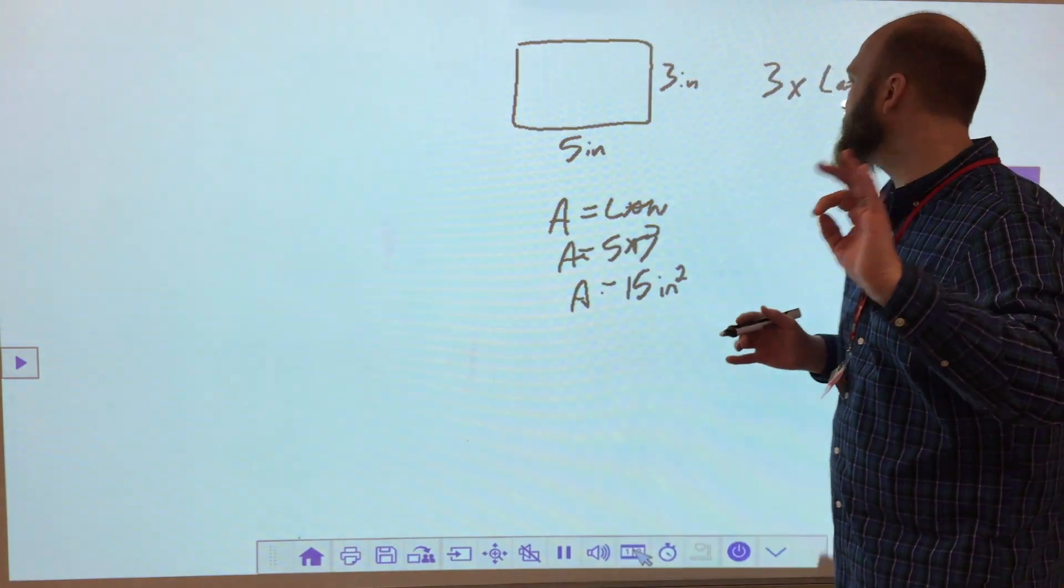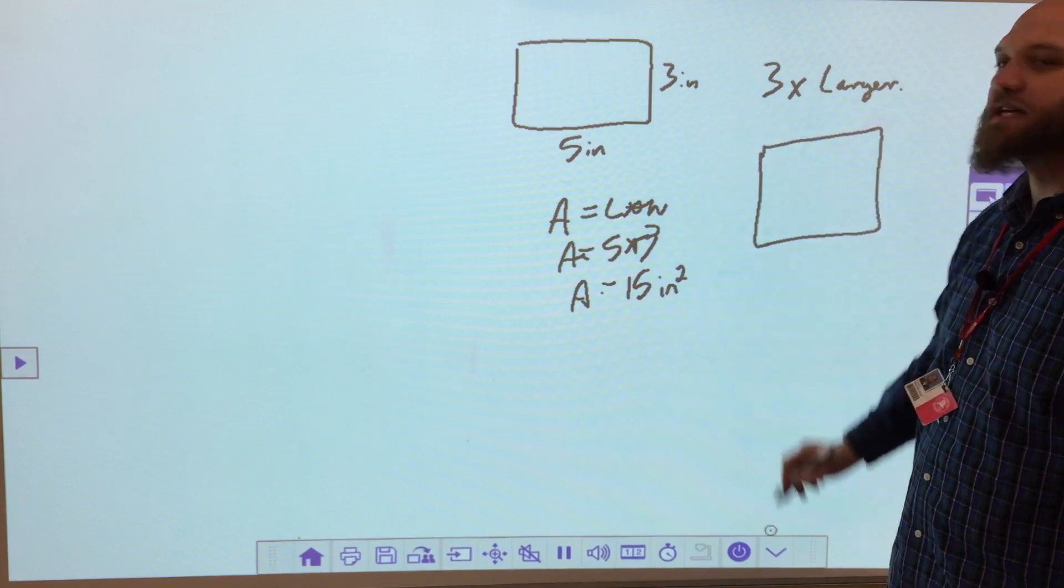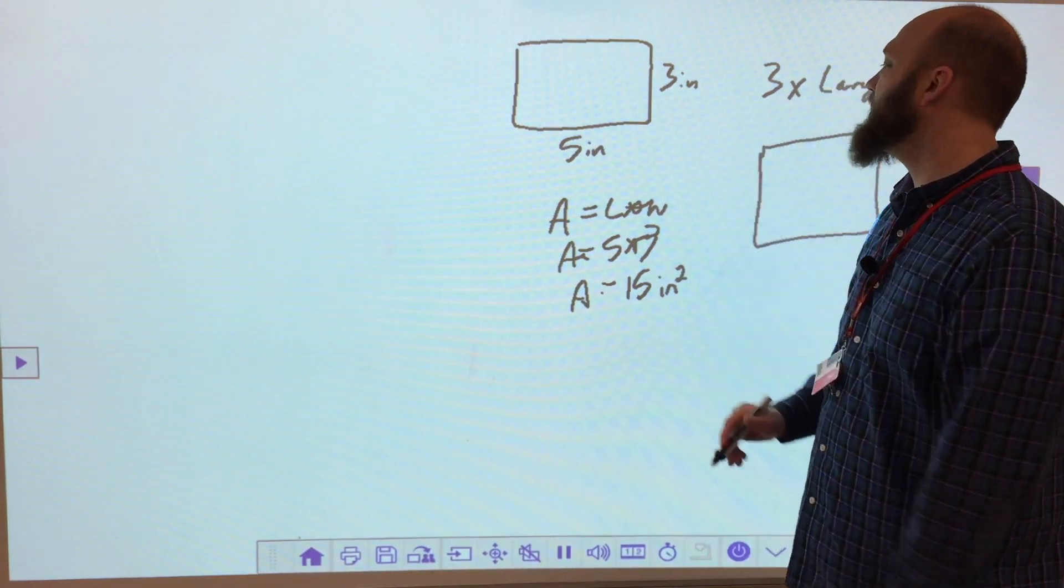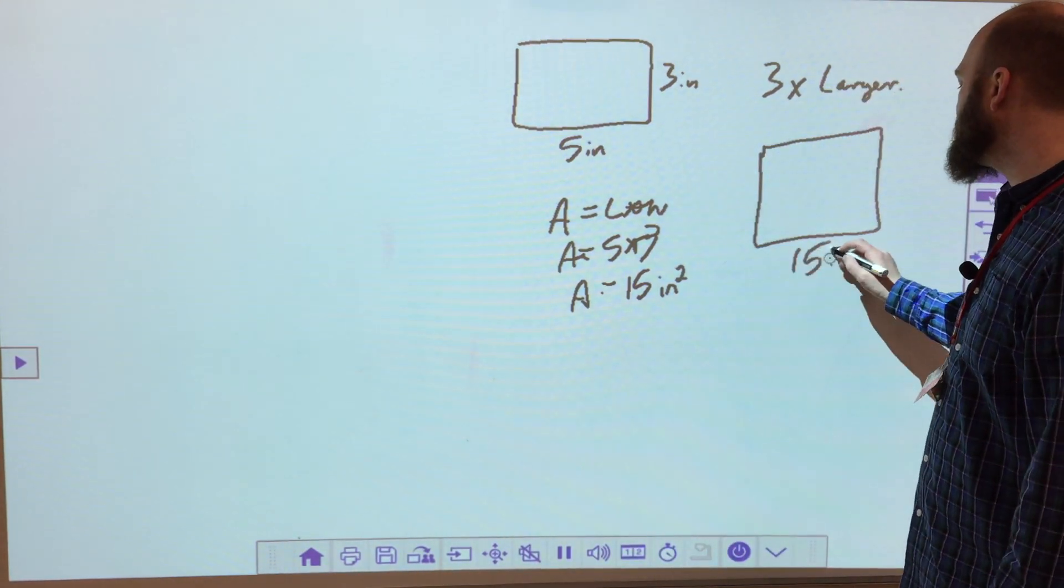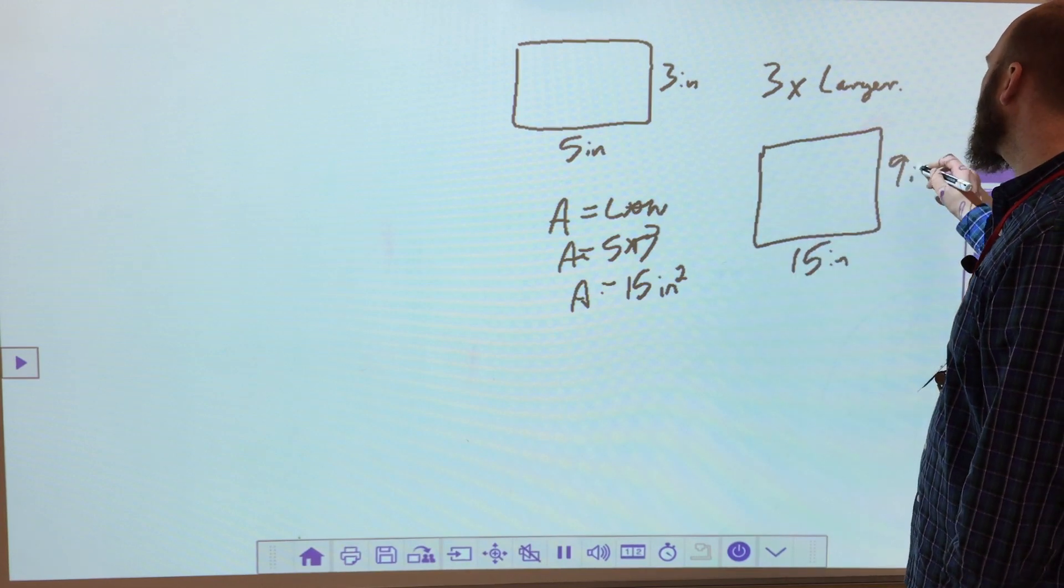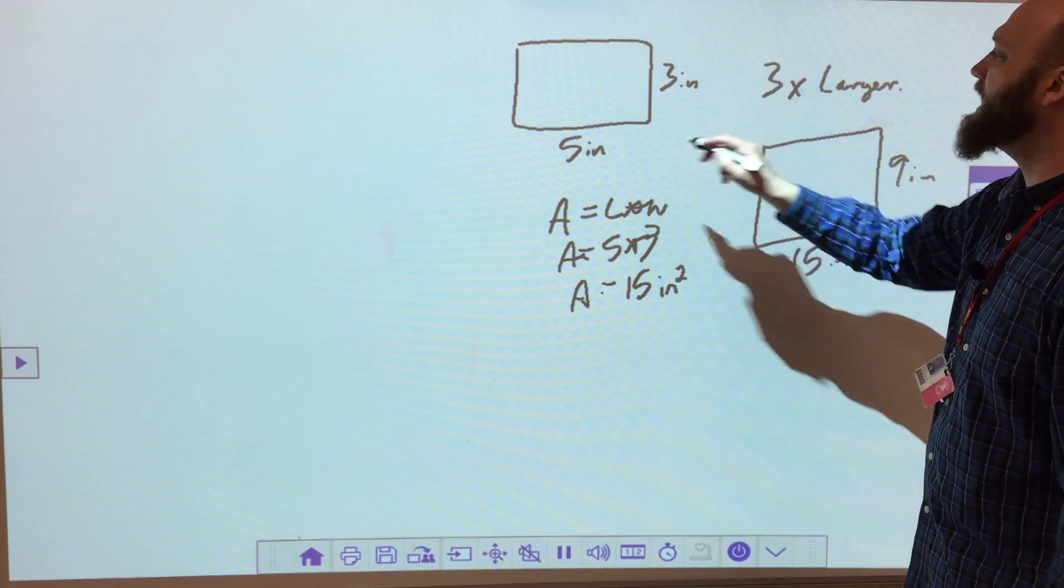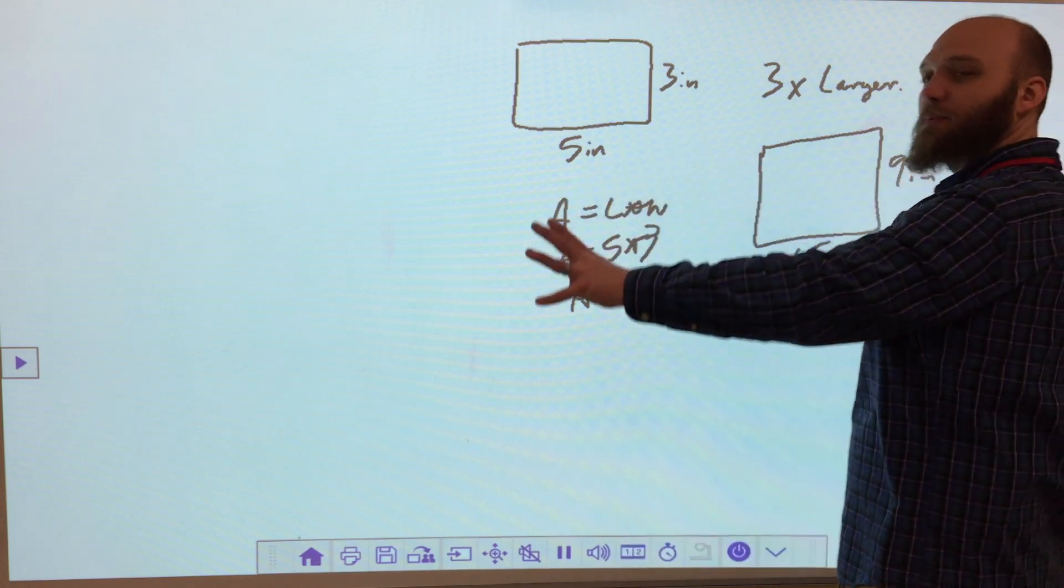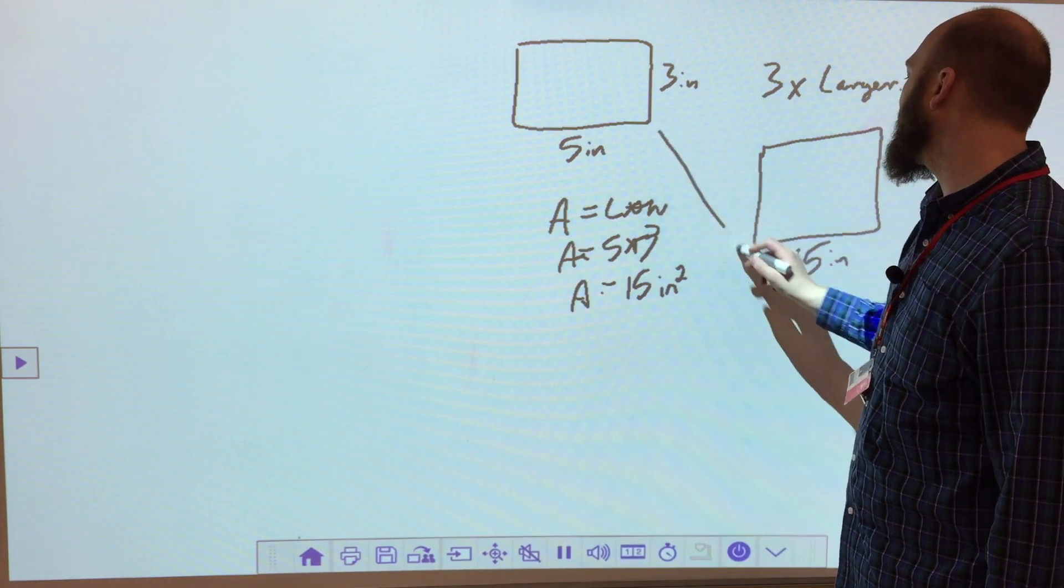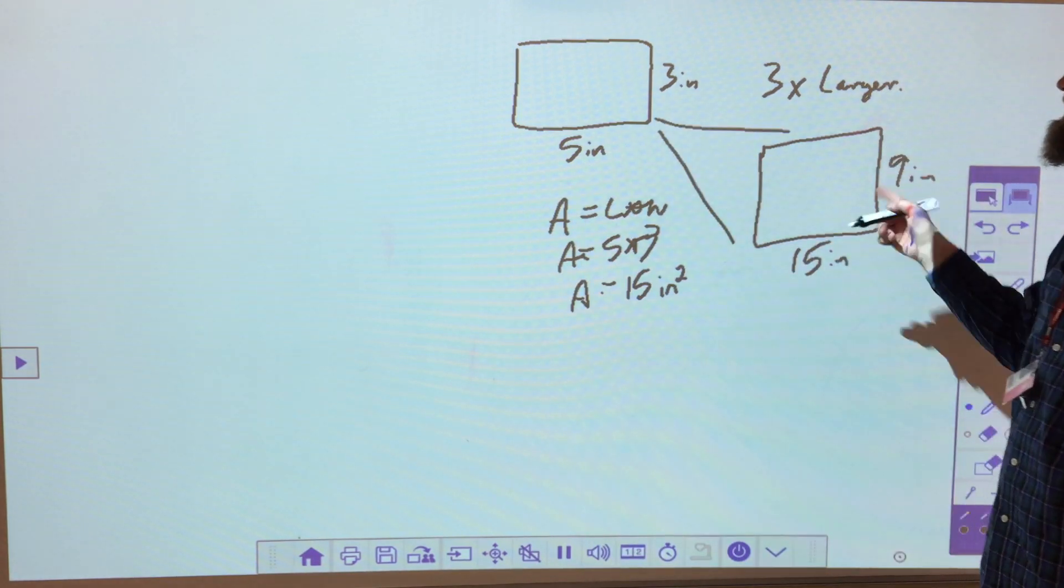So what does it actually look like? The easiest way to solve this is to make yourself a second copy. And if it's three times larger, that means it's 15 inches by nine inches. Three times three is nine, five times three is 15. There's my blown up one. This little guy is exploding out to this big guy.